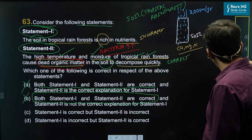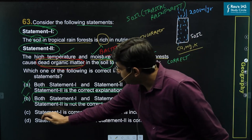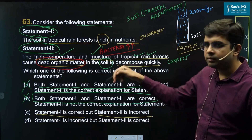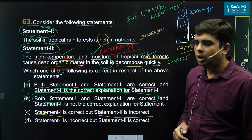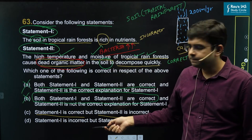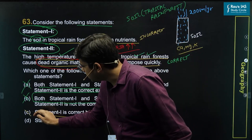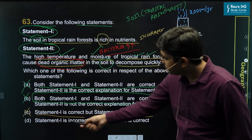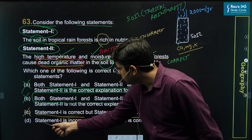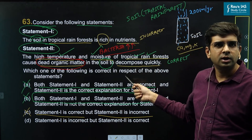Option C says Statement 1 is correct but Statement 2 is incorrect — this is the reverse of what we have discussed. Statement 1 is incorrect and Statement 2 is correct, so eliminate Option C. Option D says Statement 1 is incorrect and Statement 2 is correct — this is exactly what we have discussed, so choose Option D as the right answer.